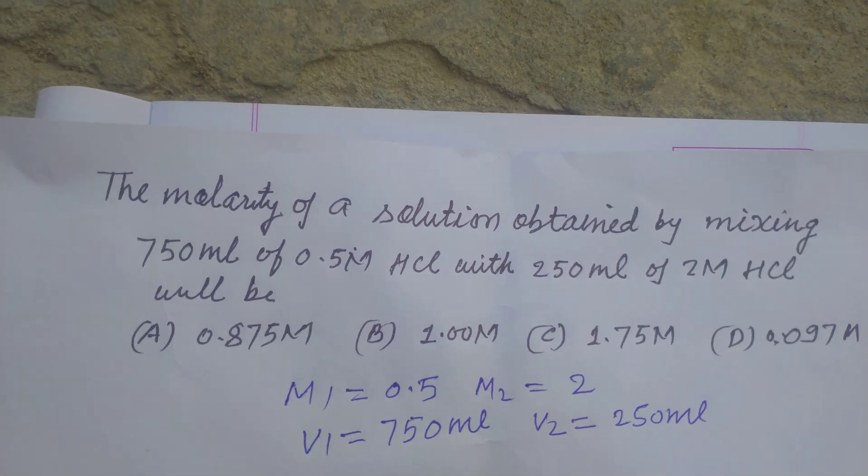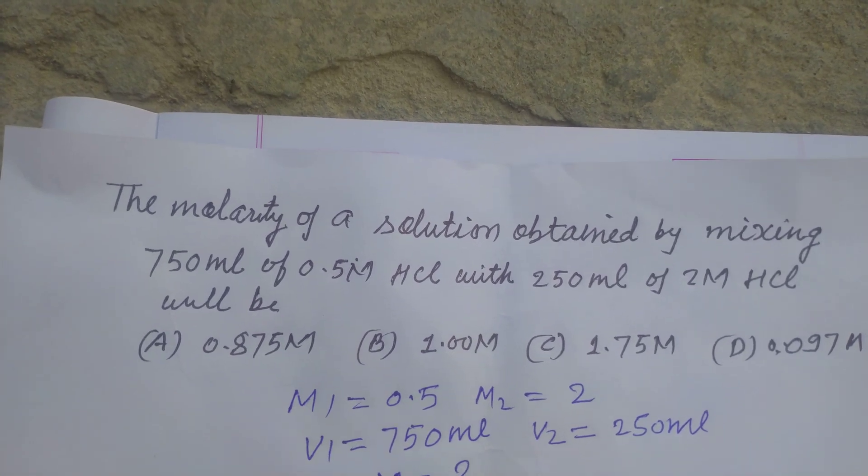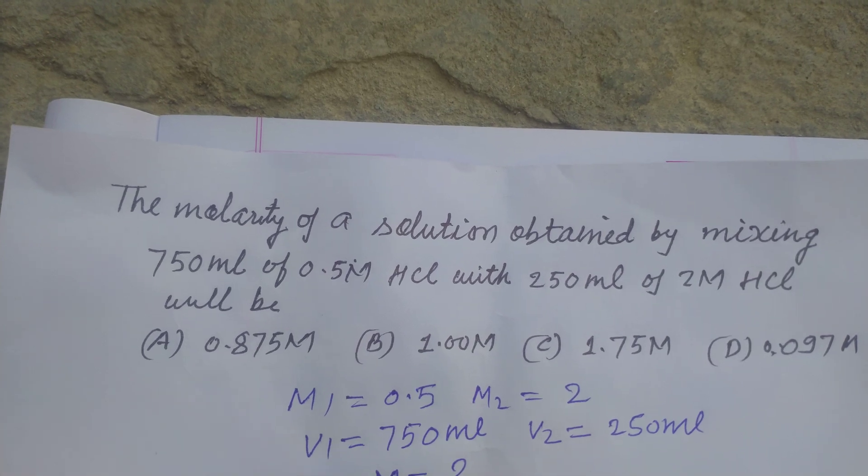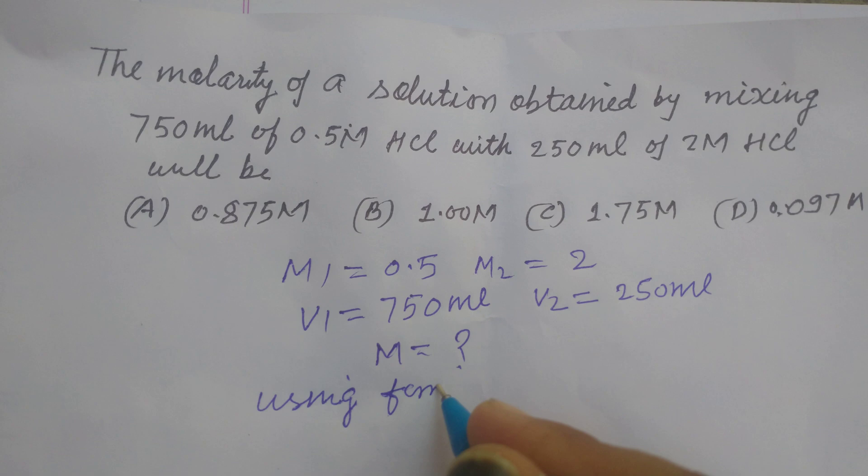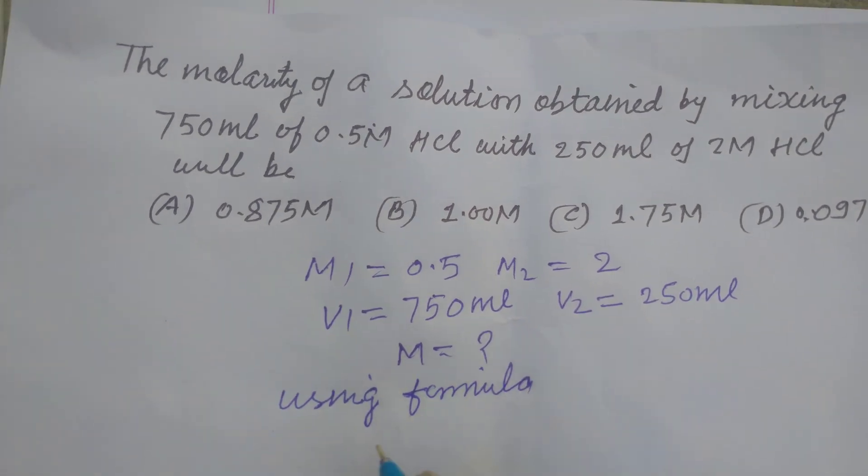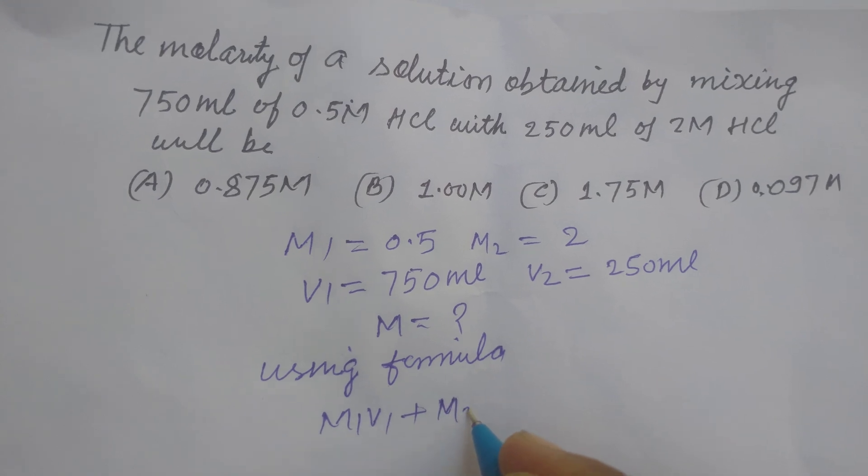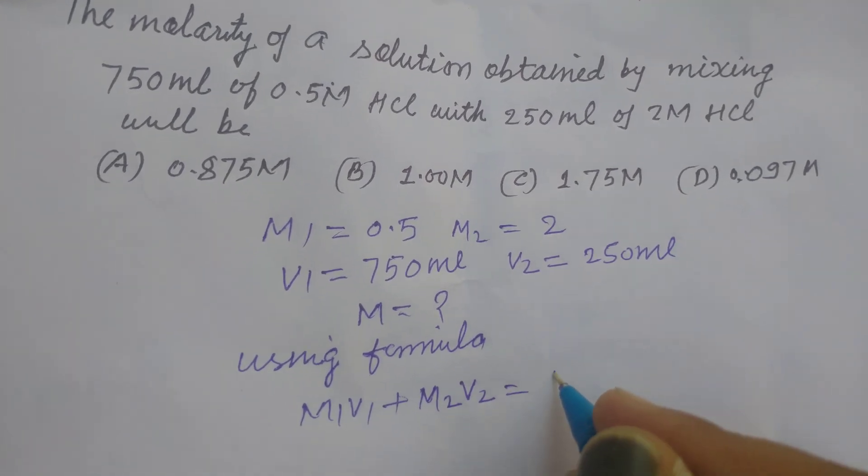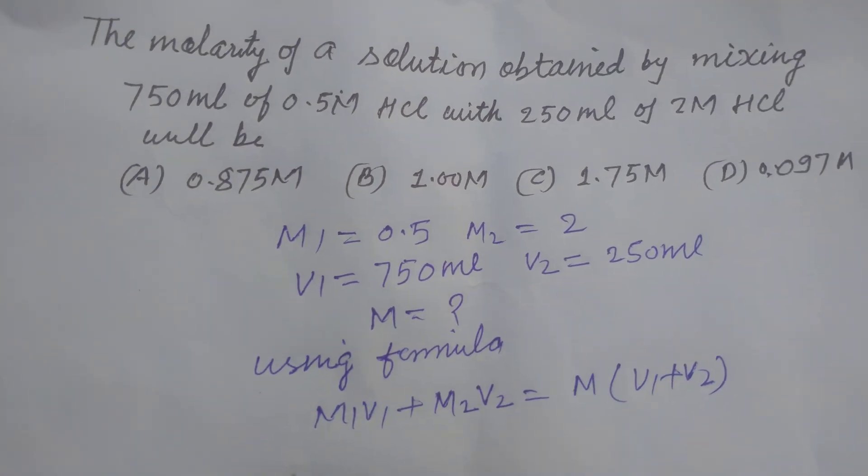We want the molarity of this solution. So let it be M. By using the formula M1V1 plus M2V2 equals M times V1 plus V2, okay,